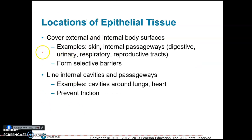Epithelial tissue is located where it's needed to cover external and internal body surfaces: skin, internal passageways like the digestive tract, the urinary tract, respiratory airways, and reproductive tracts. It can form selective barriers that allow certain materials to cross and prevent others. It is also found lining internal cavities and passageways.